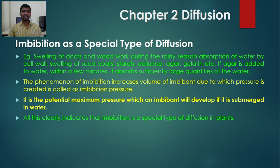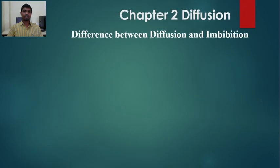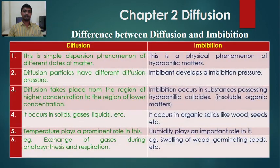All of this clearly indicates that imbibition is a special type of diffusion in plants. During imbibition, molecules diffuse as a result of their concentration gradient until they are distributed uniformly. Now let us look at the difference between diffusion and imbibition — diffusion is on the left side and imbibition on the right side of the table.